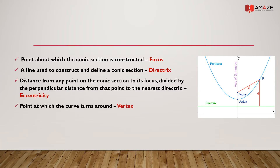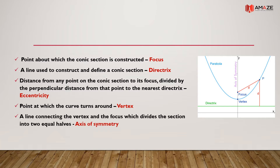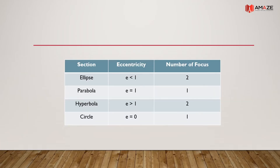The point at which the curve turns around is its vertex. A line connecting the vertex and the focus which divides the section into two equal halves is the axis of symmetry. For an ellipse, eccentricity is less than 1 and the number of foci is 2. For a parabola, eccentricity equals 1 and number of foci is 1. For a hyperbola, eccentricity is greater than 1 and number of foci is 2.